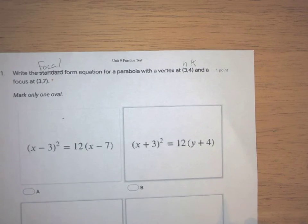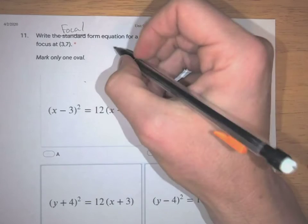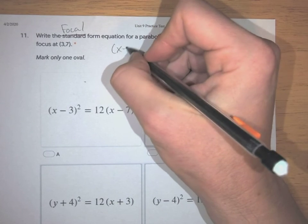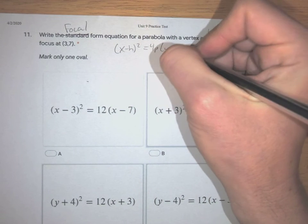Okay, so let's jump back over here. Now remember, there's four different versions of focal form, which can be tricky. This one opens up. So we want (x - h)² = 4p(y - k). Okay?